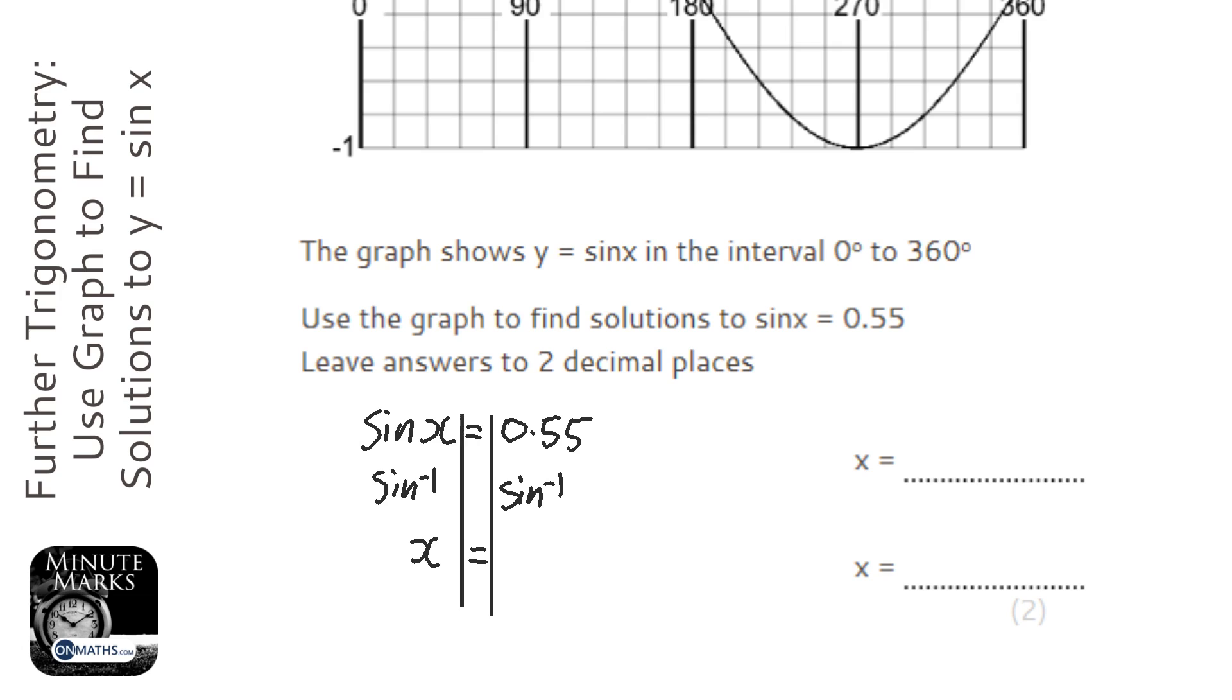and so x equals inverse sine, let's get my calculator, let's get the inverse sine 0.55, which is 33.37, and we might think we're finished.